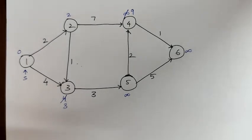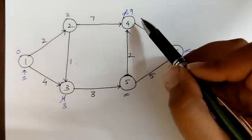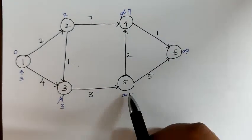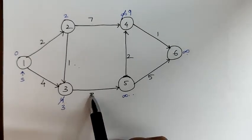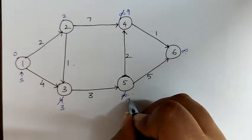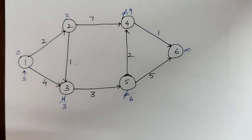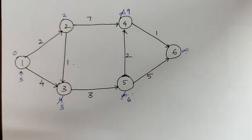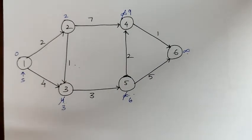Again, we find the shortest vertex. Here, we find the shortest vertex between 3, 9, infinity and infinity. So the shortest vertex is 3, and 5 is the only vertex connected to 3. Let's check: 3 plus 3 gives us 6, which is less than infinity. So this infinity can be modified to 6. Now, it's not always that all the vertices will be relaxed — they may or may not be relaxed — but we should check for each vertex.